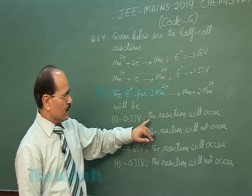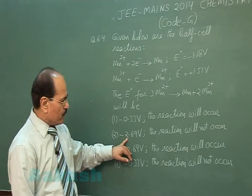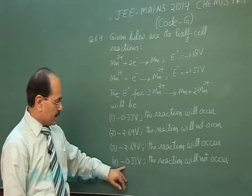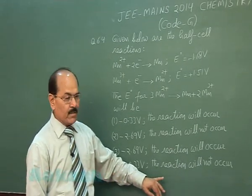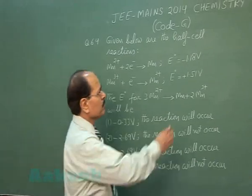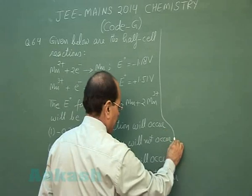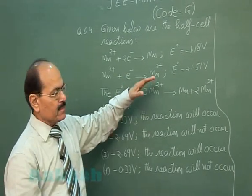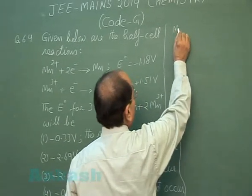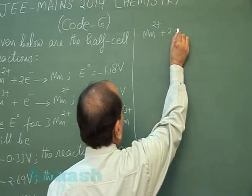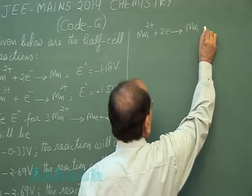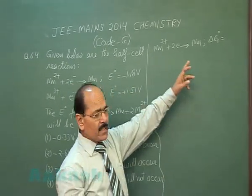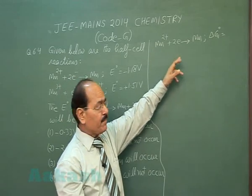The four options are: minus 0.33 V (reaction will occur), minus 2.69 V (reaction will not occur), minus 2.69 V (reaction will not occur), and minus 0.33 V (reaction will not occur). To solve this, we use the two reduction reactions and find their standard Gibbs free energy change values.